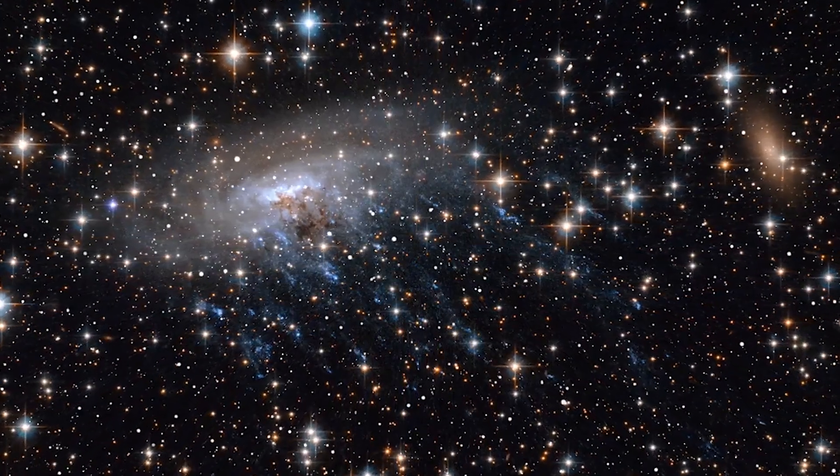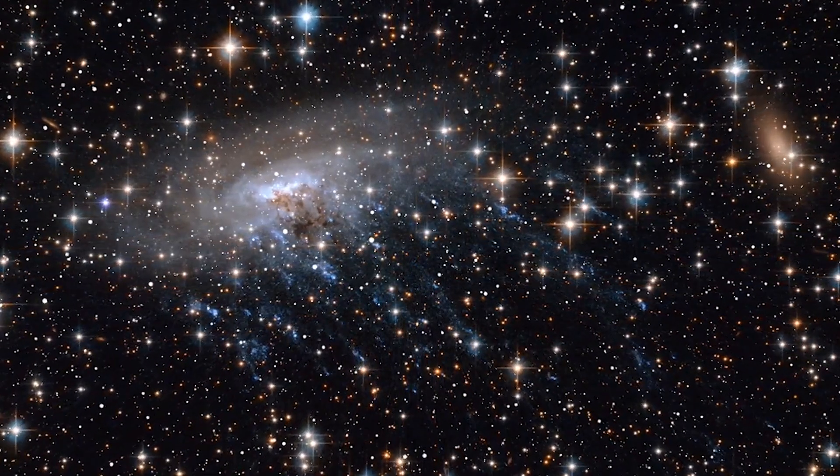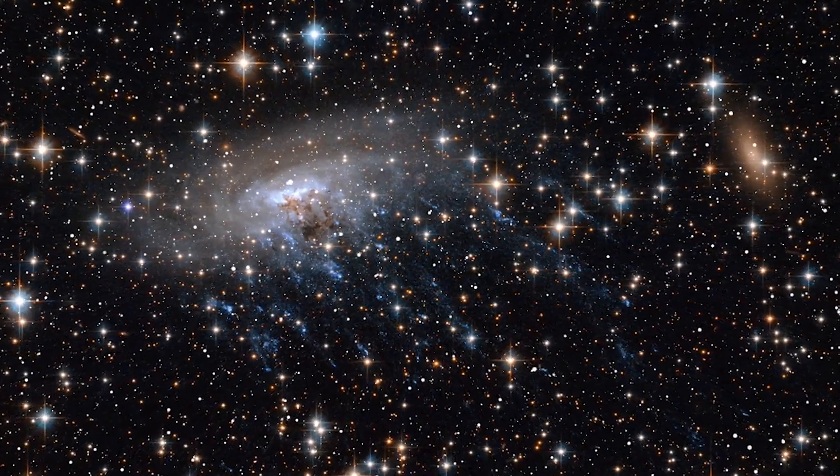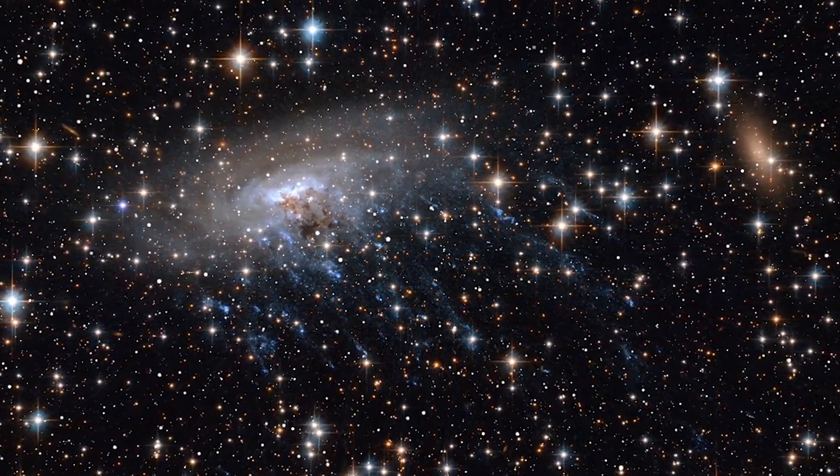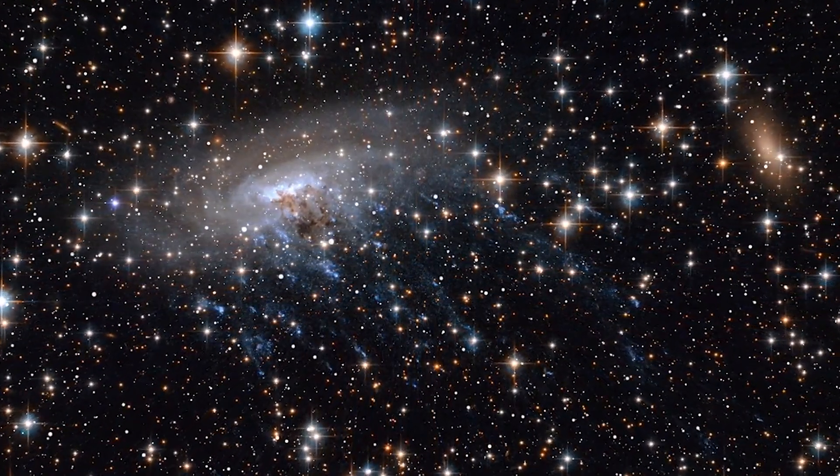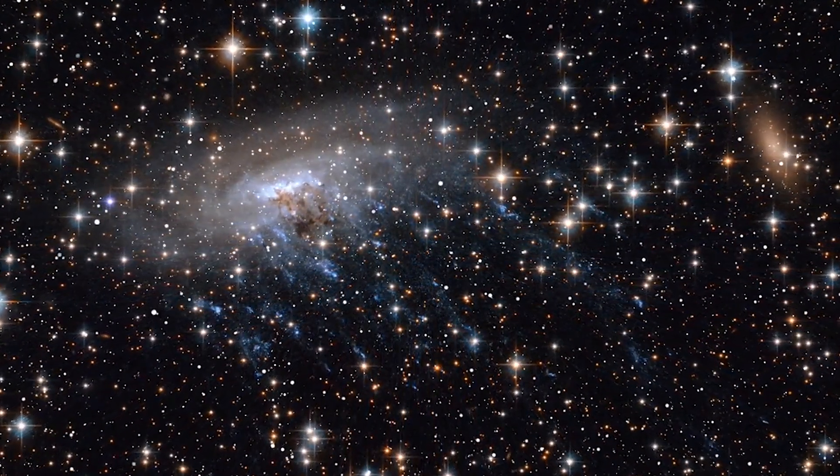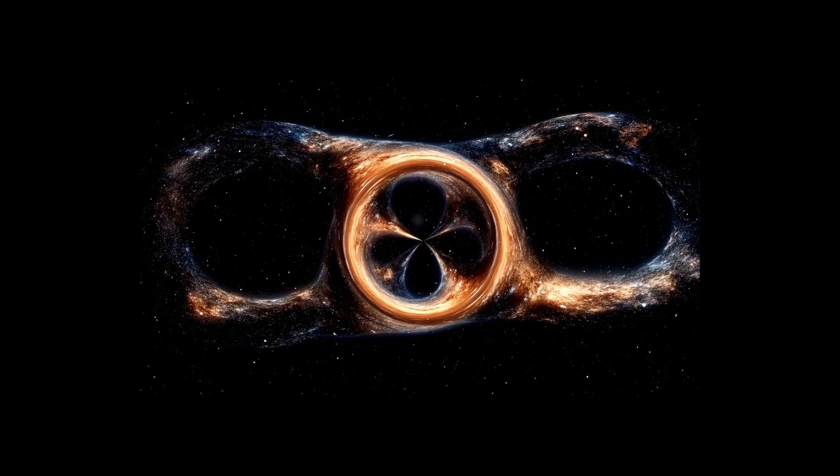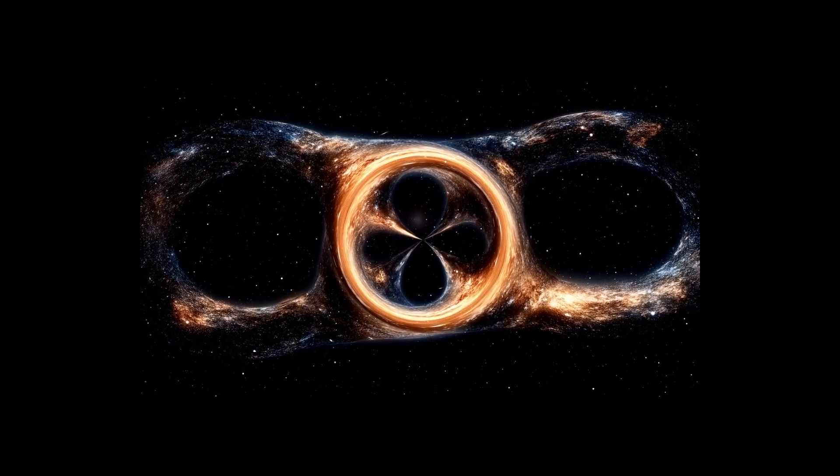But what's even more fascinating is what this means for our understanding of the universe. For decades, scientists have studied black holes mostly through indirect evidence. We can't see a black hole itself because its gravity is so strong that not even light can escape it. What we do see are the effects of what happens around it: glowing gas, warped light, and gravitational waves. Sagittarius A-star offers a front row seat to watch these cosmic processes unfold, right in our own galaxy.